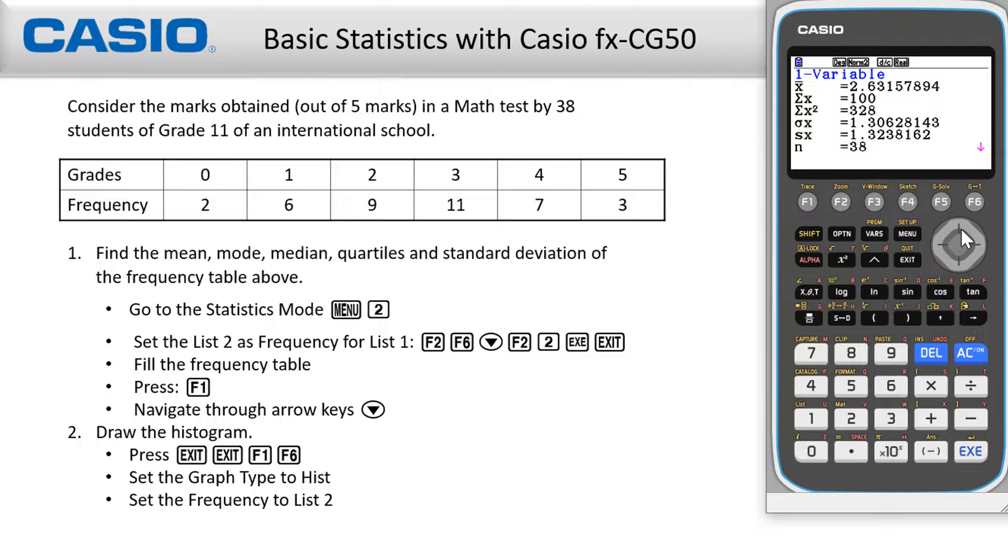X bar is the mean, which is 2.63. The standard deviation is 1.306. The quartiles are represented by Q1 and Q3. The median is 3. Finally, the mode is also 3.